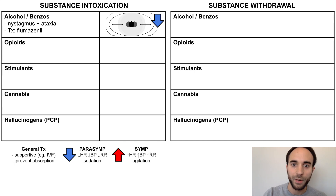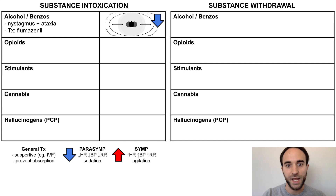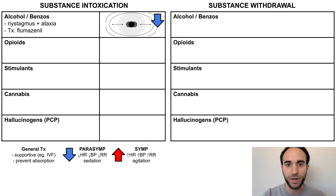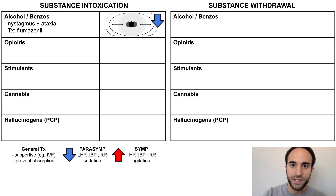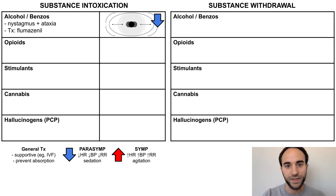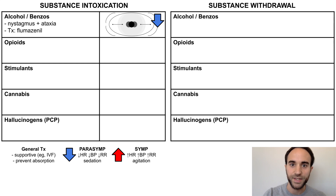The blue arrow represents parasympathetic nervous system activation, which manifests as decreases in heart rate, blood pressure, and respiratory rate. By contrast, a red arrow will represent sympathetic nervous system activation, which manifests as increases in these vital signs.